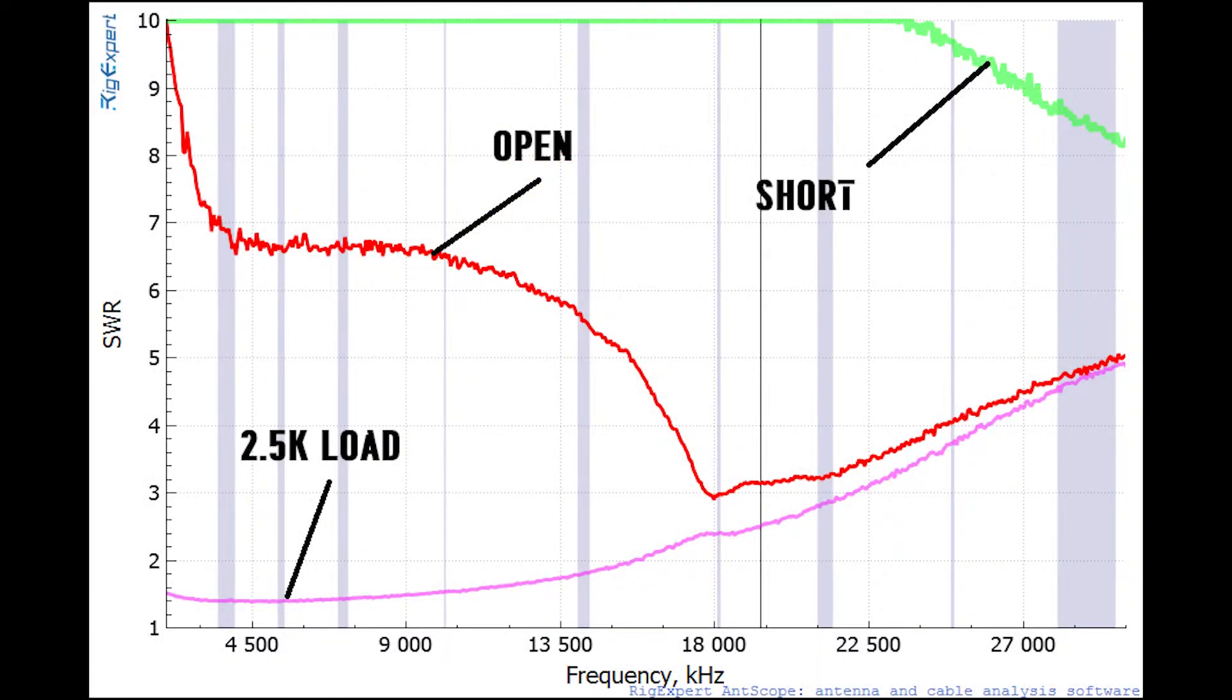Here is our open short and load sweep of our 64 to 1 transformer on an FT-240-43. And what should be obvious from looking at this is that the low frequency performance of this transformer is going to be much better than the 49 to 1 on a 240-43. Although it looks like the performance is really going to fall off above 20 meters.